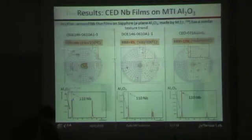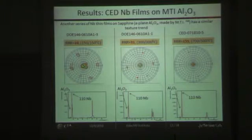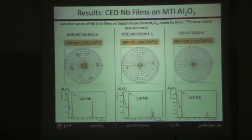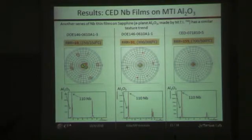Here's another set of Niobium films of the 110 orientation produced on Sapphire. We bought the Sapphire from a different vendor to try to understand if there's any difference between the two vendors. What we see here is that as we increase the substrate temperature and the pre-bake temperature — the temperature at which samples are held in-situ before deposition — we get pure crystalline films that give us higher RRR values. The highest RRR in this series was 155.